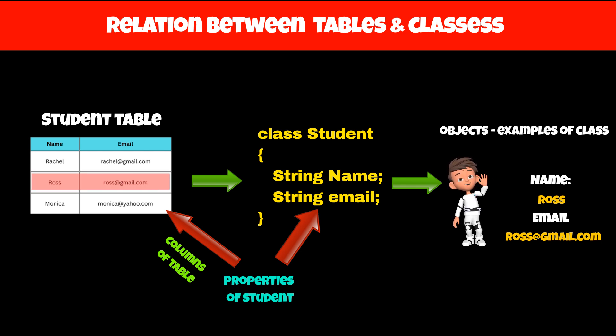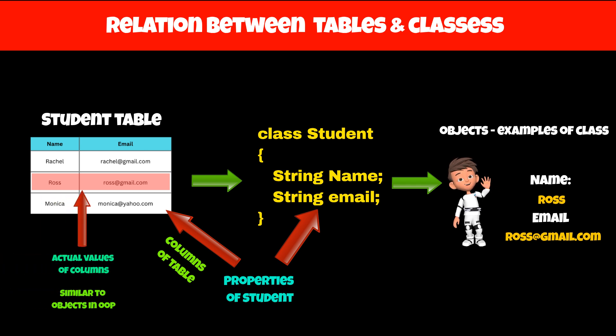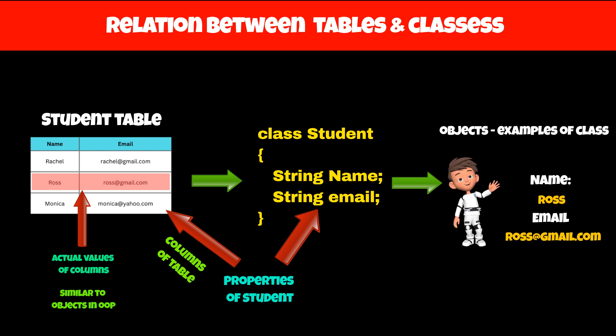For example, we can have a row with the name as 'Ross' and email as 'ross@gmail.com'. So, while developing any application, we have to create a table for each class, and each object should be stored as a row in the SQL table.